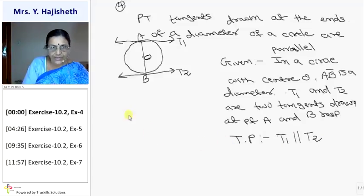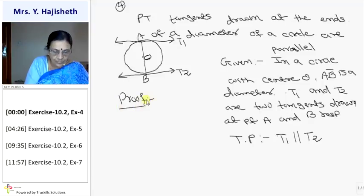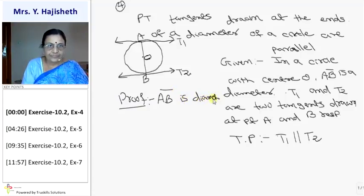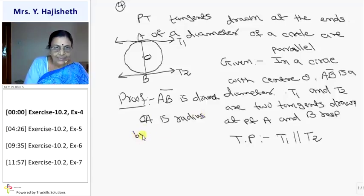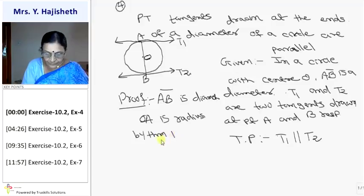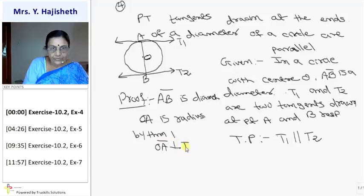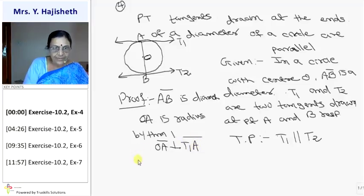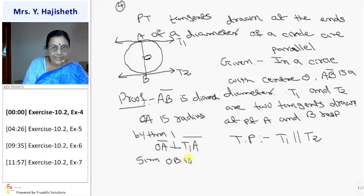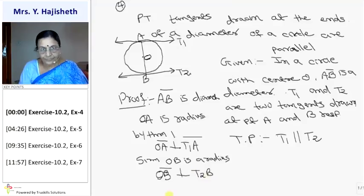Then either there is any construction. Either I will write the proof. In proof, what do we do? AB is diameter, given. So OA is radius. Right? So by theorem one, OA is perpendicular to T1. Similarly, OB is a radius, so I can say that OB is also perpendicular to T2B.